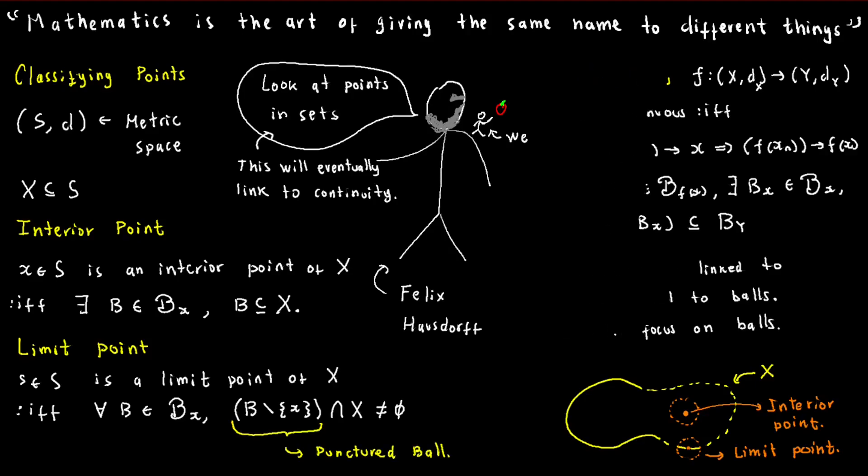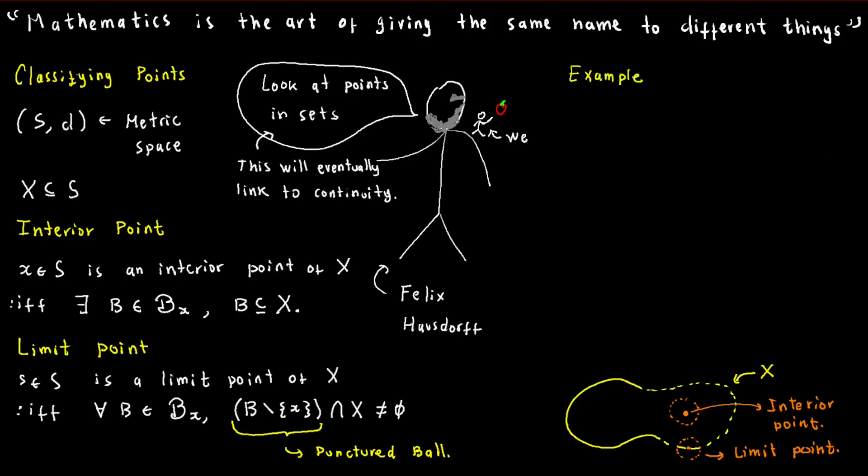To get a better grasp of these concepts, let's apply them to two subsets of the real numbers. First up, let's consider a set A of numbers strictly greater than zero but less than or equal to one. Notice that every point in A except for one is an interior point. That's right, every point has enough wiggle room to fit inside A.